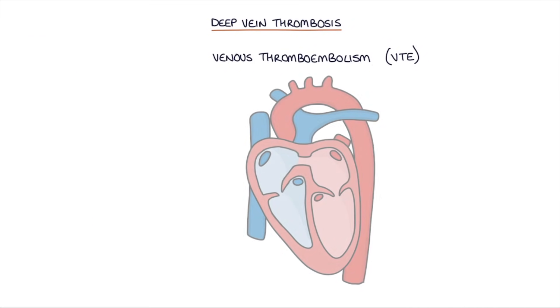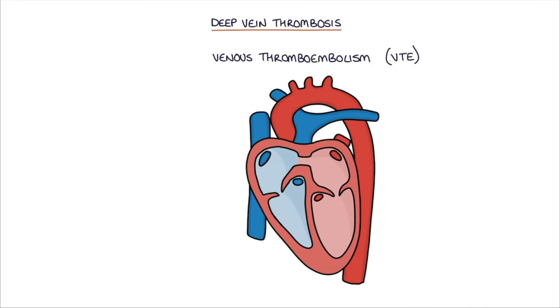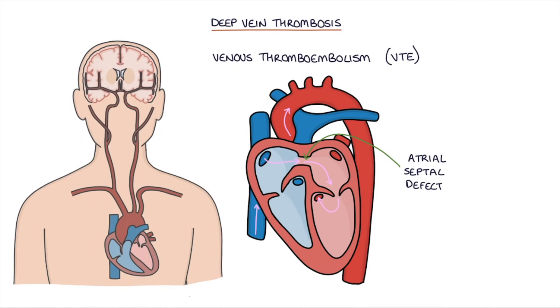If the patient has a hole in their heart, for example an atrial septal defect, the blood clot can pass through to the left side of the heart and into the systemic circulation. If it travels to the brain, it can cause a large stroke.